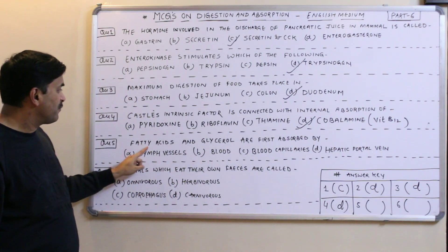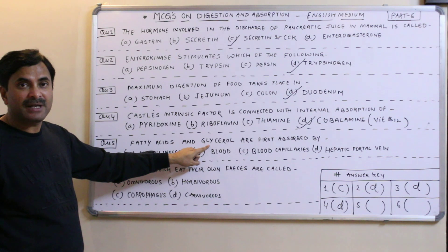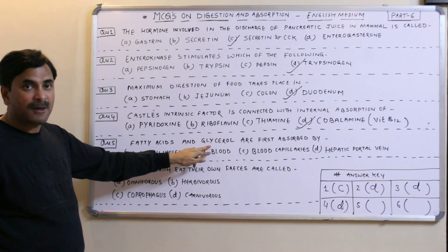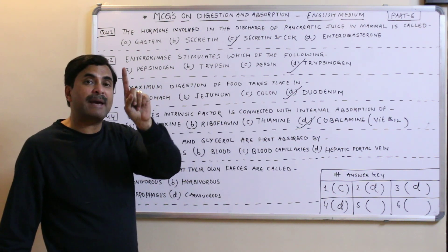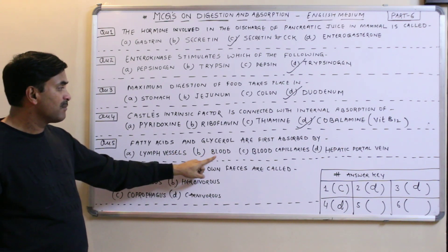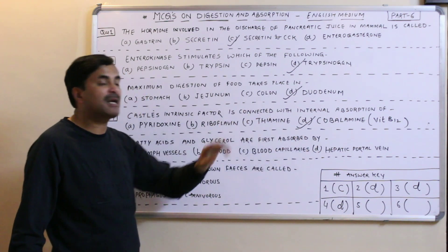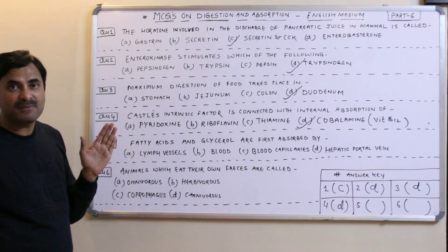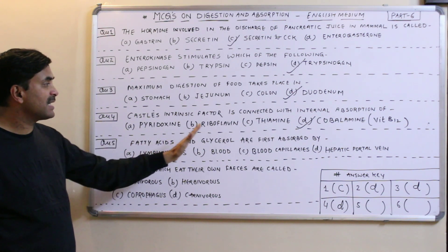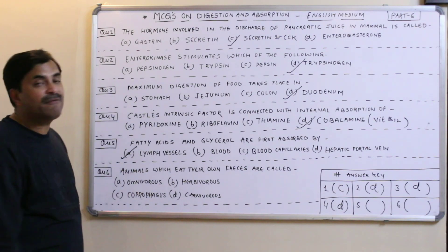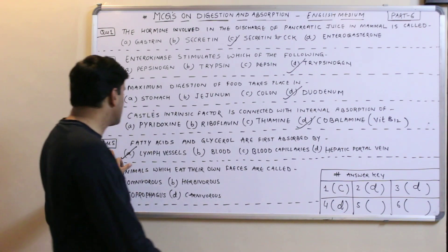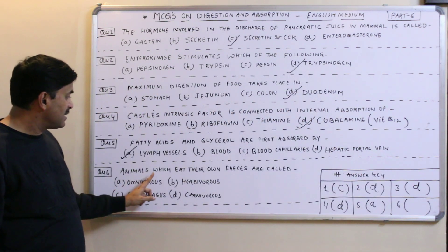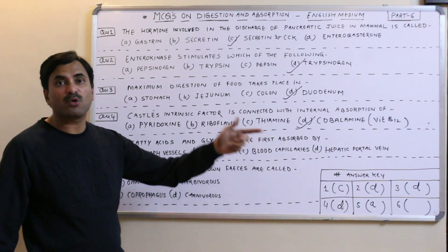Question number five: fatty acids and glycerol — when lipid is digested, fatty acids and glycerol are formed. These are first absorbed by lymph vessels, blood capillaries, or the hepatic portal vein. Since fats are not easily dissolvable in blood, fatty acids and glycerol are first absorbed by lymph vessels. The answer to question number five is A — lymph vessels.